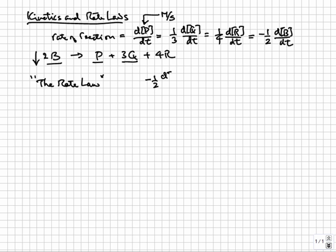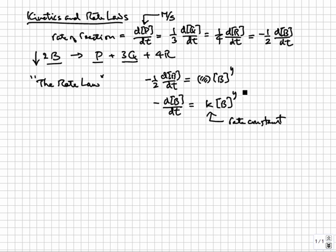Usually the rate is proportional to the B concentration to some power. We write this as negative 1 half dB dt equals a proportionality constant times the B concentration to power y. We can move the 1 half to the other side and write negative dB dt equals k times B to power y, where k is the rate constant.